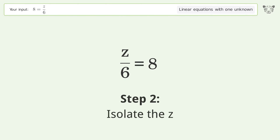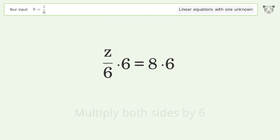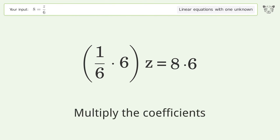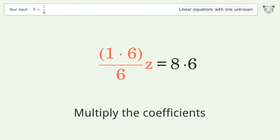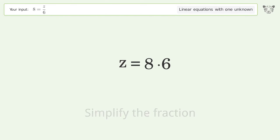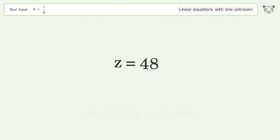Isolate the z — multiply both sides by six. Group like terms. Multiply the coefficients. Simplify the fraction. Simplify the arithmetic. And so the final result is z equals 48.